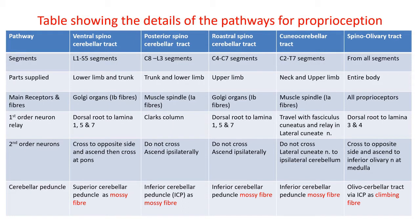The cuneocerebellar tract originates from C2 to T7, carrying neck and upper limb proprioceptors — predominantly muscle spindle, group 1A fibers. They travel along with the fasciculus cuneatus in the posterior column and relay in the lateral cuneate nucleus in the medulla. The second-order neurons from the lateral cuneate nucleus send their axons to the ipsilateral cerebellum through the inferior cerebellar peduncle, reaching the spinocerebellum as mossy fibers.